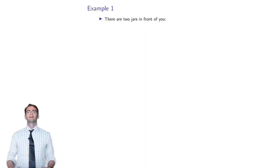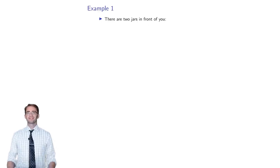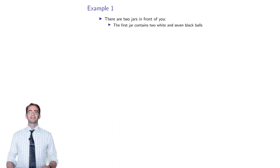Let's do some examples of Bayes' formula. In the first one you have two jars sitting in front of you. Probability involves a lot of jars and urns and jugs that are typically full of things. The first jar has two white balls and seven black balls in it, and the second jar has five white balls and six black balls.